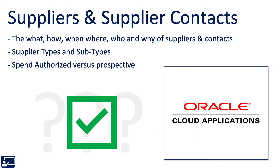So let's recap. You should now understand the what, how, when, where, who, and why of suppliers and contacts. You should understand a little bit about types and subtypes — we talked about prospective, et cetera. And you should also understand this whole idea of spend authorized versus prospective. Still not sure? Watch it again — it's free. But if you understand the material, it's time to move on to the next lesson in this course.